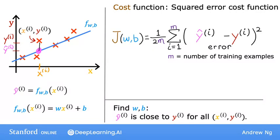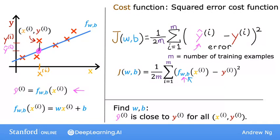So just as a reminder, the prediction y hat is equal to the output of the model f at x. So we can rewrite the cost function j of w,b as 1 over 2m times the sum from i equals 1 to m of f of x_i minus y_i the quantity squared. Eventually, we're going to want to find values of w and b that make the cost function small.